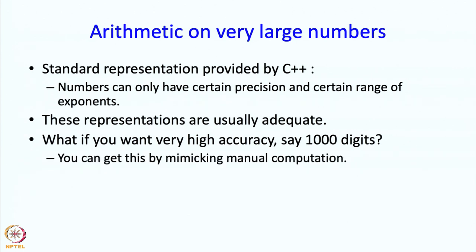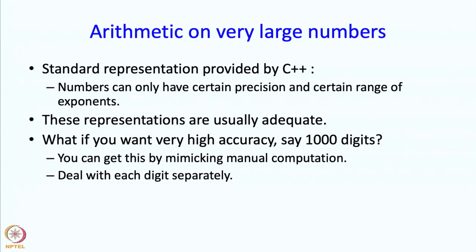It turns out that the central idea here is to mimic what you do manually. What do you do manually? You deal with each digit separately. When you do the arithmetic, you look at one digit at a time. So in your program as well, you will typically do something like have a thousand iterations to process a thousand-digit number.